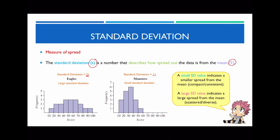Another way you can tell, other than just looking at the values, is for the data set representing eagles, the mean is going to be somewhere around here because you've got a relatively symmetric data set. We can see there are a lot of bars situated away from the mean, so this has a large standard deviation. Whereas on the data set representing monsters, most of the values are concentrated and clustered around the mean, so this has a smaller standard deviation. You can work out standard deviation mathematically, or you can also eyeball it if you have the graph.